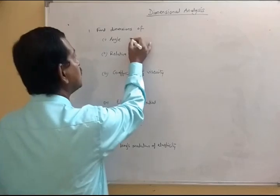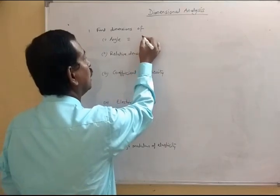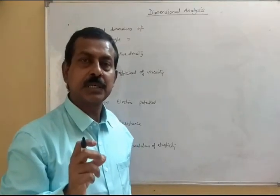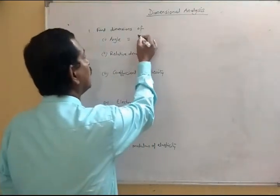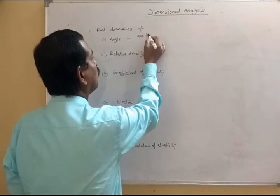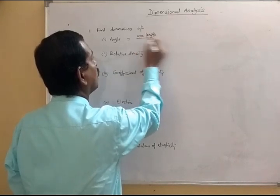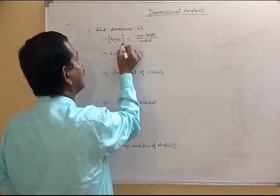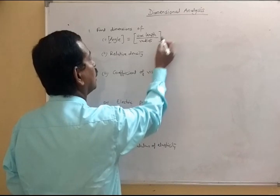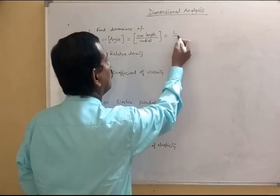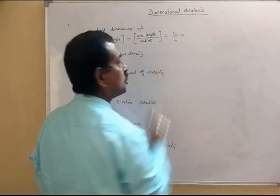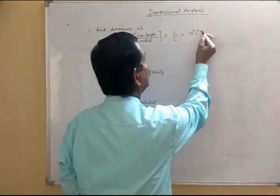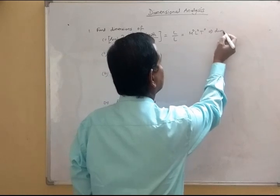Now angle — this is the ratio of the length of arc to the radius of the circle. So it is arc length divided by radius. If you take its dimension, it will be L by L. This is a dimensionless quantity, so it is M⁰ L⁰ T⁰. That means it is dimensionless.